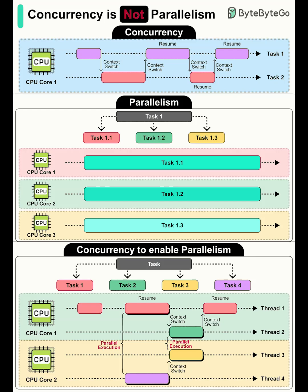When to use which? If the workload is I/O-bound — lots of waiting on networks, disks, or user input — focus on concurrency first. If the workload is CPU-bound — crunching numbers, transforming large datasets — focus on parallelism to leverage multiple cores.